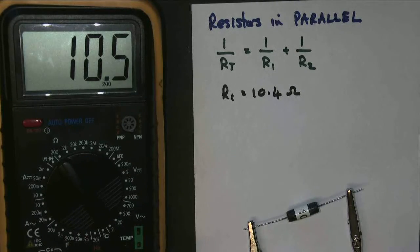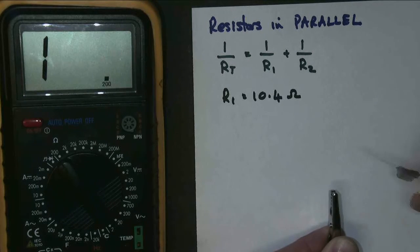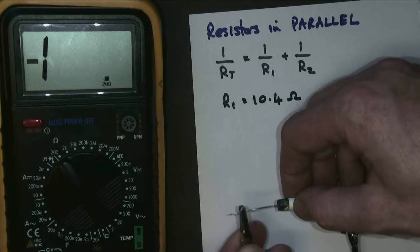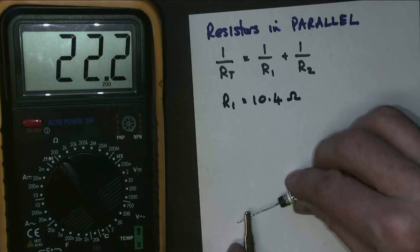And if we're extremely lucky, we'll find that our other resistant hasn't changed much either. So let's put that one in the circuit. This is the one which was nominally 22 ohms. There it is.